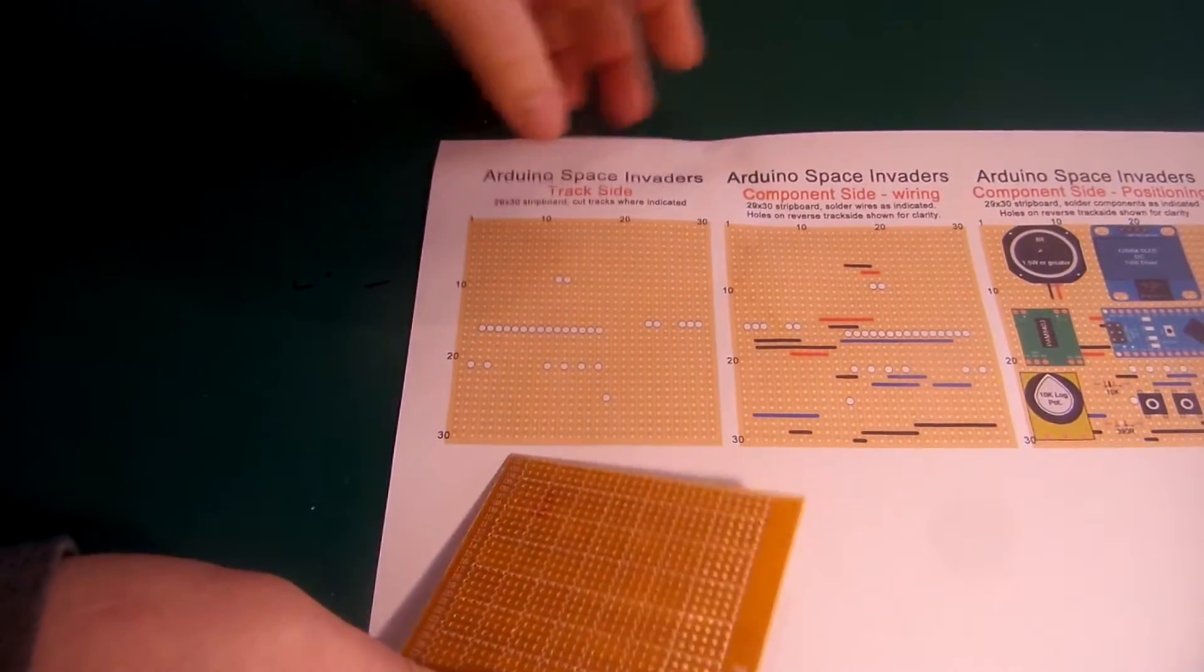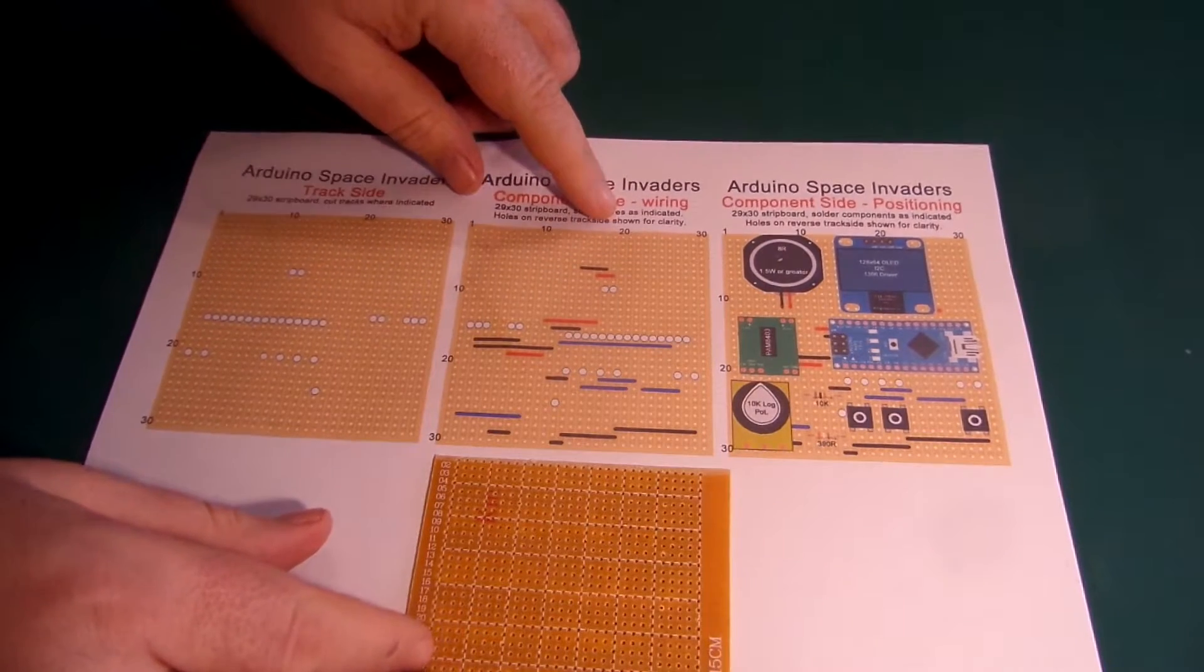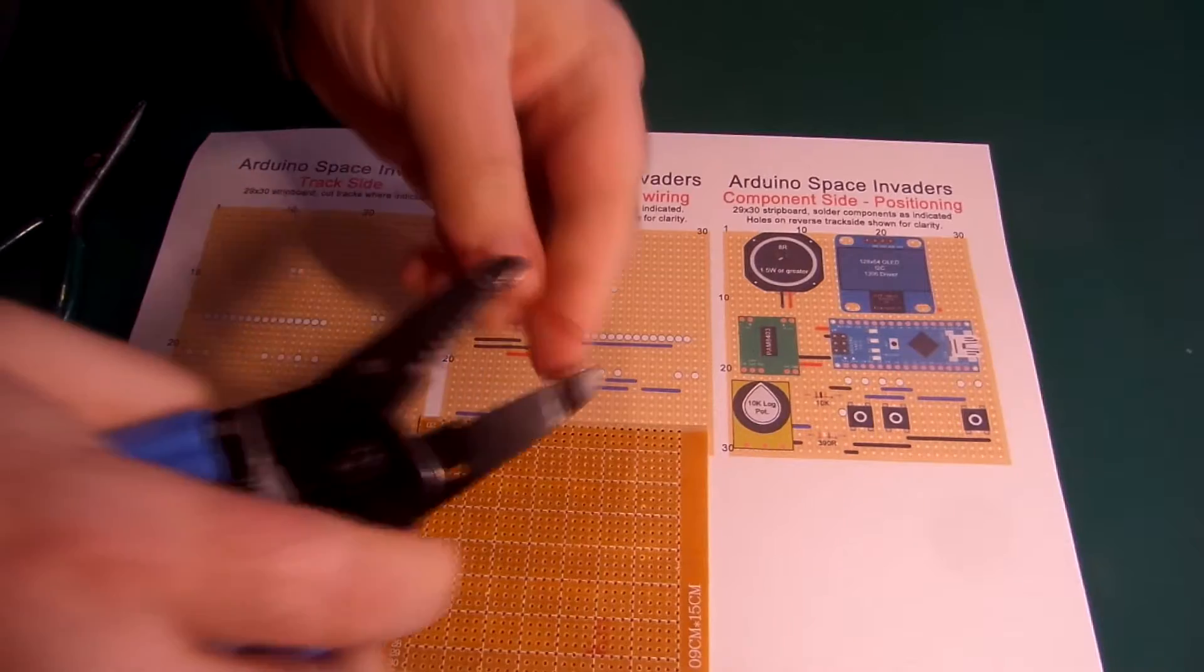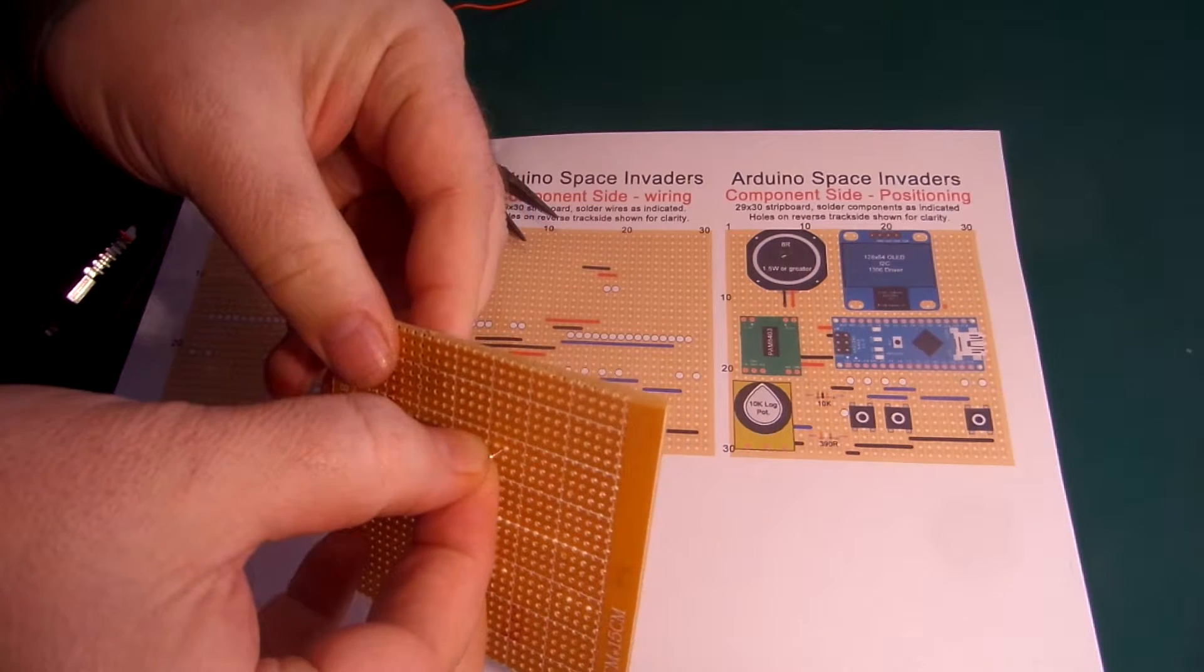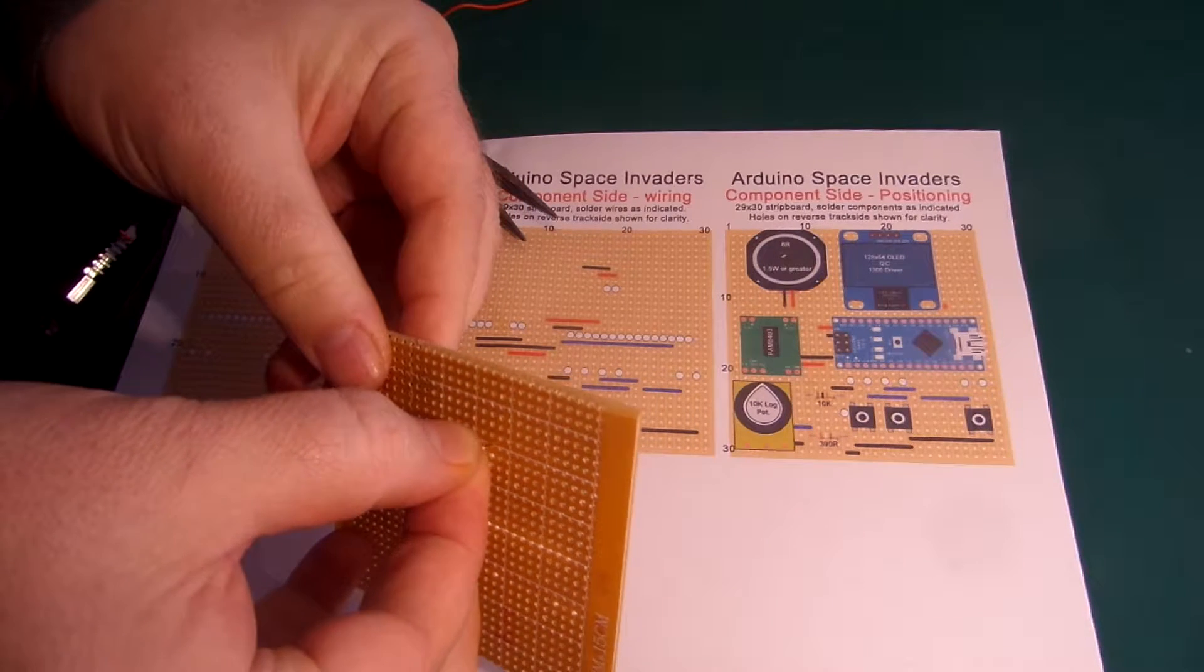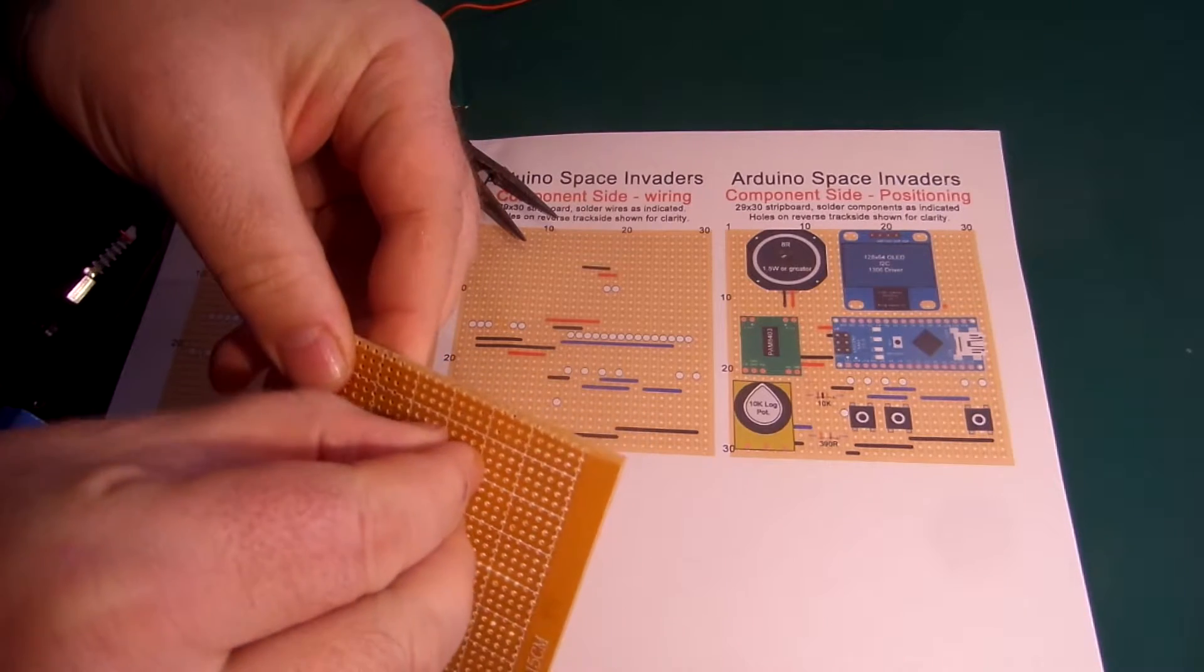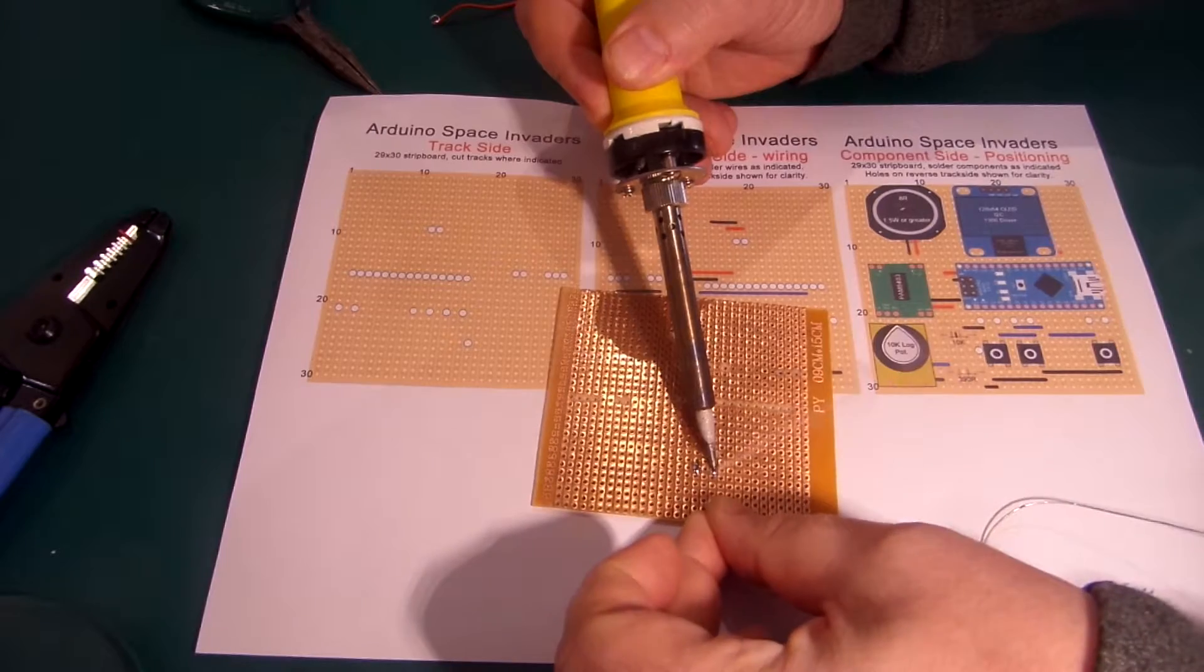I then turn over the board and it will match the second diagram that shows where to add the additional jumper wires. Cut and strip each wire to length and take care to insert it into the correct position on the breadboard. I've used red for supply voltage, black for ground and blue for anything else. Just need to turn over and solder the connections.